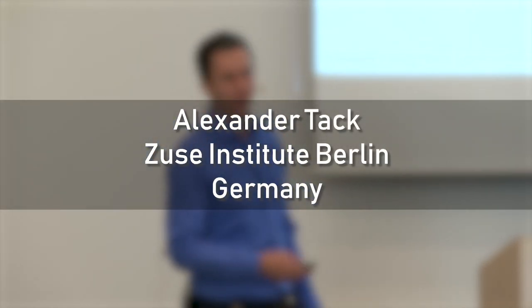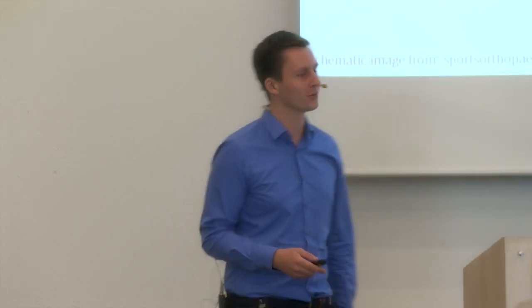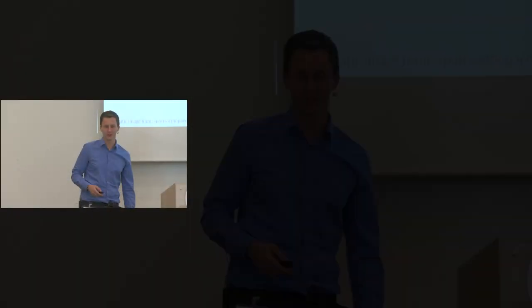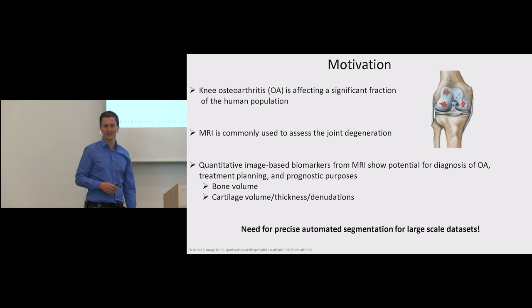Let's jump into it. Knee osteoarthritis OA is a degenerative disease leading to pain and a decreased range of motion. MRI is commonly used to assess the grade of OA and image-based biomarkers show potential for diagnosis of OA for treatment planning and for prognostic purposes.